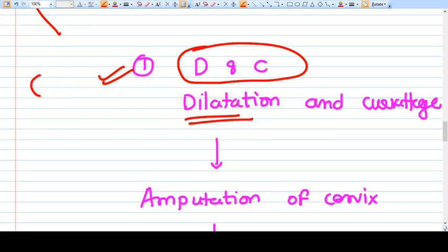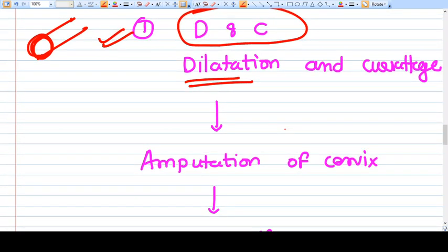We just want to make the cervical os more dilated so that it can be patent in the healing of the surgery. So we want to make this cervical os a patent thing. That's why we are doing the dilatation and curettage before. Then what we do?